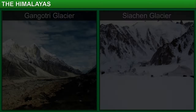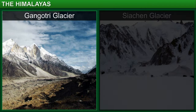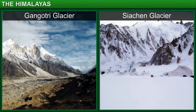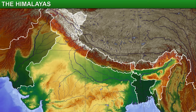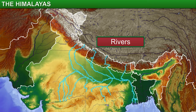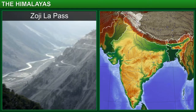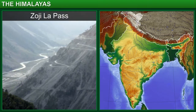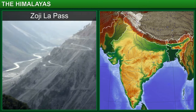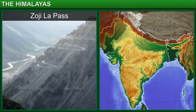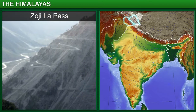However, several glaciers, such as the Gangotri and the Siachen, originate from this range. These glaciers feed rivers that form the source of water for a large part of the population. The Zoji La Pass is also situated in the Great Himalayan range. This pass is the only link between Ladakh and Kashmir.